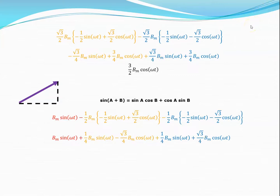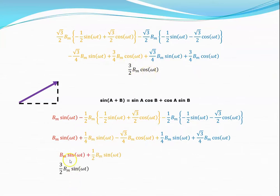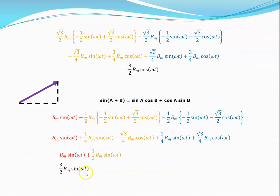Once we do that, what we're left with at the top is 3/4 + 3/4 = 3/2 · BM · cosine(omega T). Down below, the sine(omega T) component remains — 1/4 + 1/4 = 1/2, plus one gives 3/2 — so we get a vertical component of 3/2 · BM · cosine(omega T) and a horizontal component of 3/2 · BM · sine(omega T).